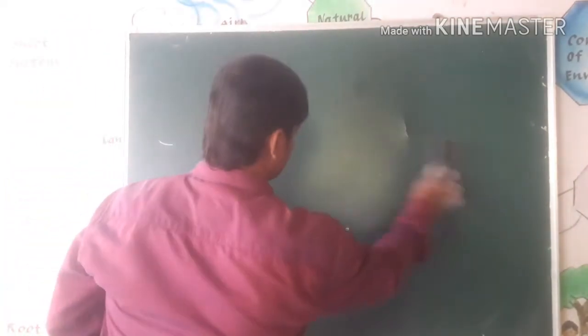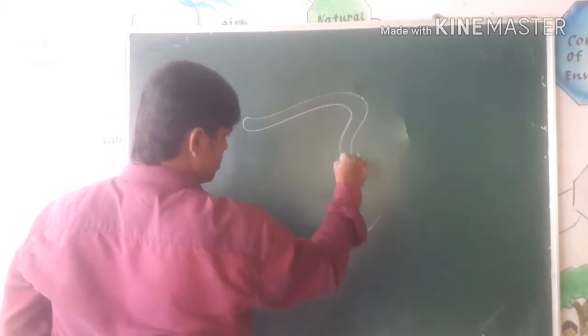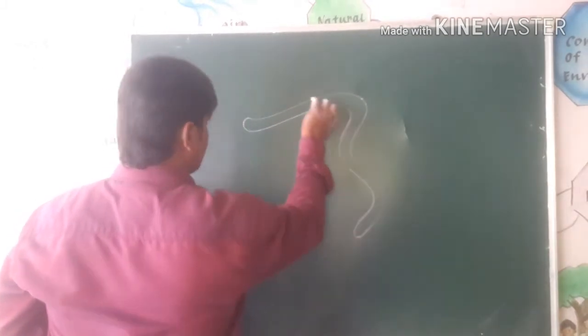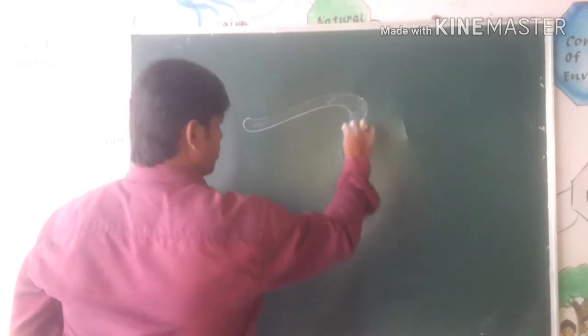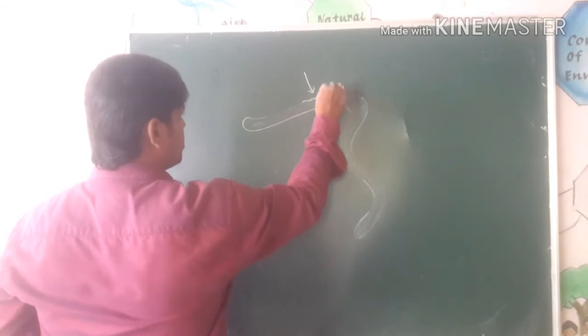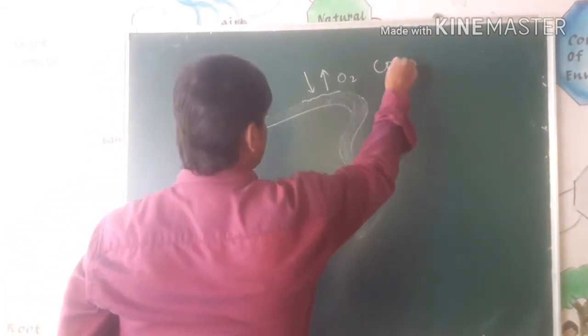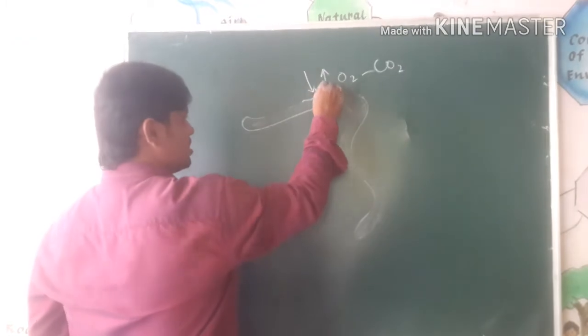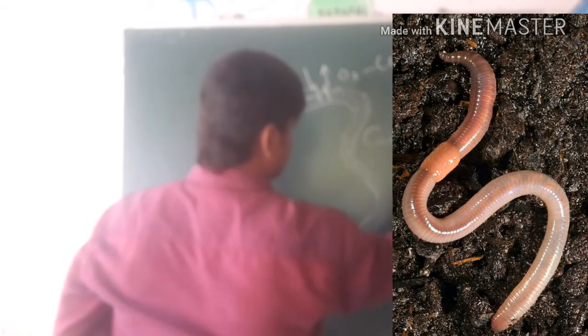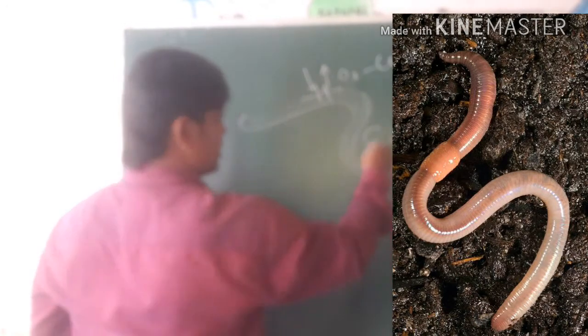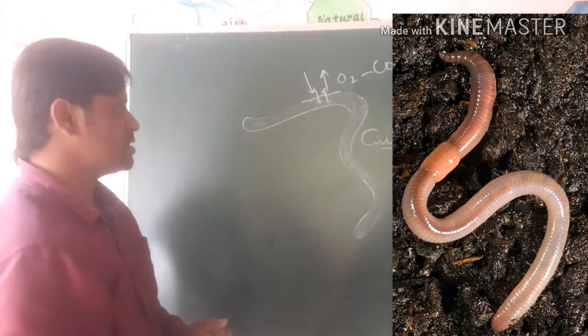Next, let's come to earthworm. How does an earthworm breathe? The earthworm breathes through the skin. It has hemoglobin and it has a moist, slimy skin. Through the skin, oxygen and carbon dioxide are exchanged — the gaseous exchange takes place through the skin, and this is called cutaneous respiration.